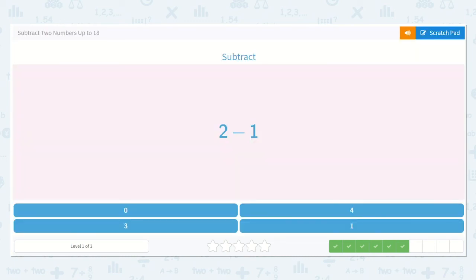Okay, now we have 2 minus 1. Instead of drawing a picture for this one, let's hold up 2 fingers. Good. Now put one of them down. Great. How many do you have up? Yes, just 1. So 1 is our answer.